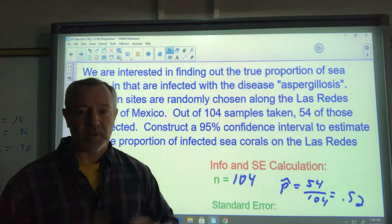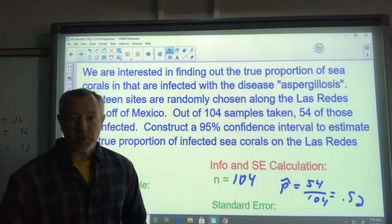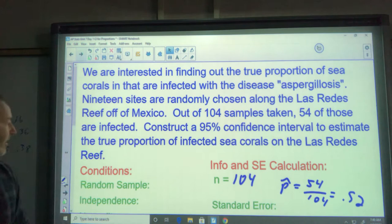Now we're trying to guess it. We're using P hat from our sample. So 54 out of 104, that's the proportion we found. That's our P hat. We're going to construct a 95% confidence interval to estimate the true proportion of infected sea corals on the Las Redes Reef.